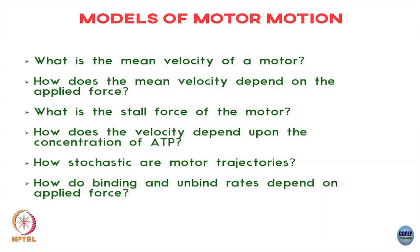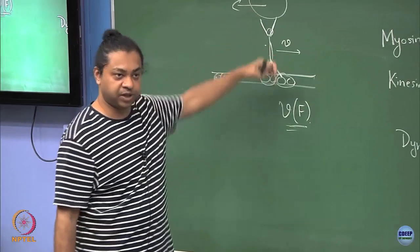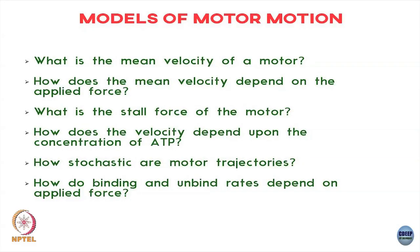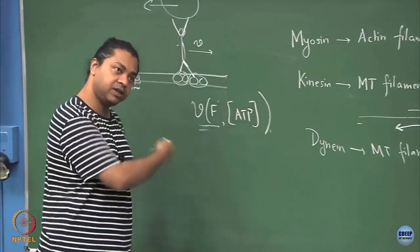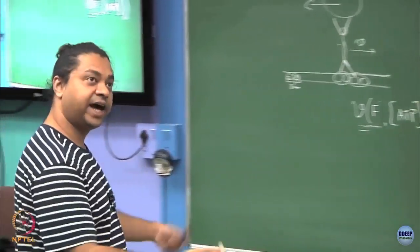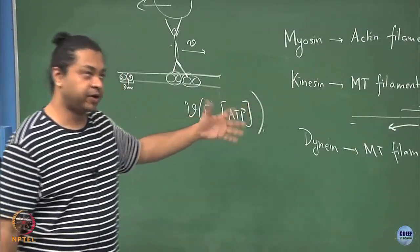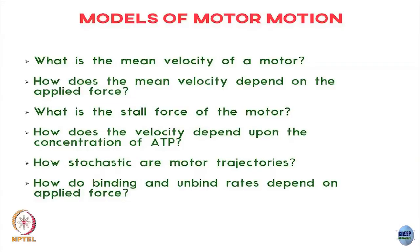I could ask: what is the mean velocity of a motor? How does this mean velocity depend on force — v as a function of f? What is the stall force, simply the force required to bring the motor to a stop? How does velocity depend on ATP concentration? These are active processes — without ATP the motors would not move at all. At very high ATP it moves with some velocity; in between concentrations, some other velocity. You have to couple the chemical cycle of ATP hydrolysis to the mechanical cycle of motor stepping.